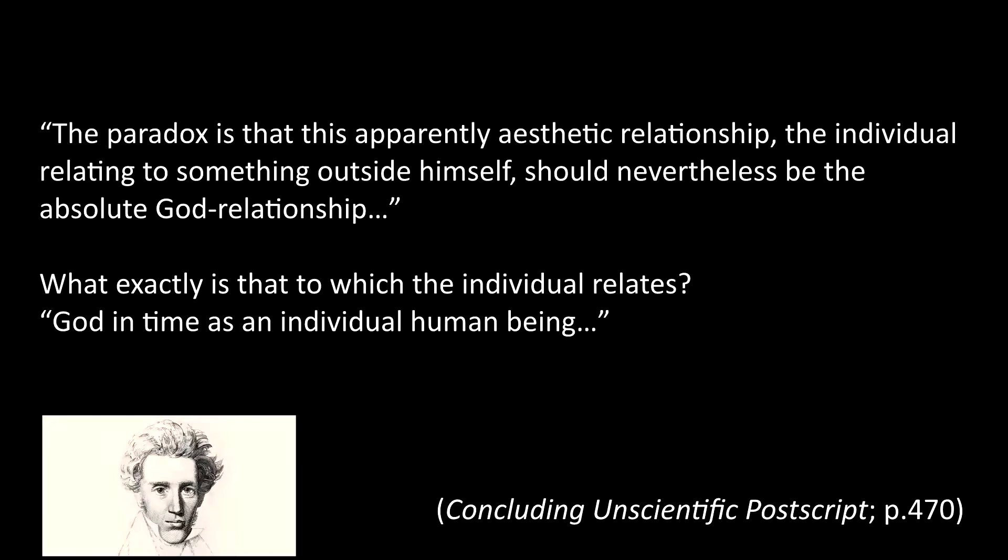Religiousness B, however — the edifying in this case has gone back outside the individual. So we've moved from the outside in the aesthetic to the inside in the ethical and Religiousness A, and now the dialectic is outside the individual again. But this time not as desire, not as immediacy, but as the God relationship. The God relationship has become something external to the individual. The paradox is that this apparently aesthetic relationship — the individual relating to something outside himself — should nevertheless be the absolute God relationship.